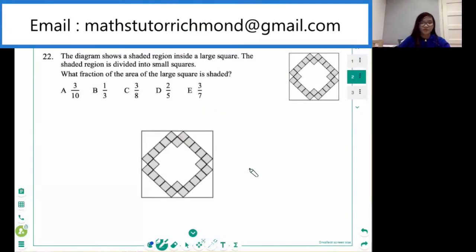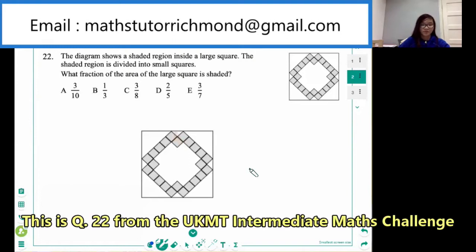The diagram shows a shaded region inside a large square. The shaded region is divided into small squares. What fraction of the area of the large square is shaded?